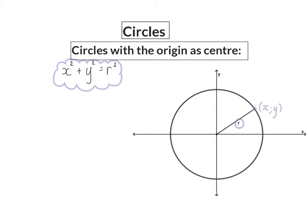From any point on the circumference, we can draw a 90-degree triangle in which we name the sides x and y. If we wanted to calculate the radius from here, we can use the theorem of Pythagoras, giving us x squared plus y squared equals r squared.